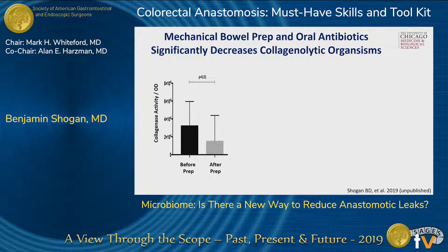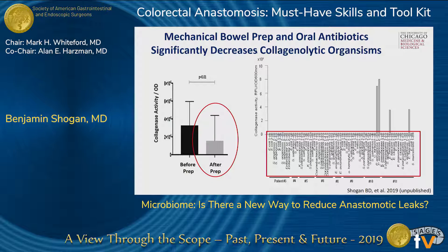We're looking at how bowel prep individualizes patients' risk of leak. This is a simple study where we looked at the collagenolytic potential in patients before bowel prep and after bowel prep. It significantly decreased after prep — the amount of collagenolytic organisms in the stool. However, within this group, it didn't wipe them out. There were still some patients who had collagenolytic organisms present. In human patients at the time of surgery, some still had colonization with high collagenolytic pseudomonas and enterococcus. This study wasn't powered to detect leak, but I will tell you that the patient who had enterococcus here did develop anastomotic leak.